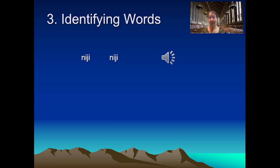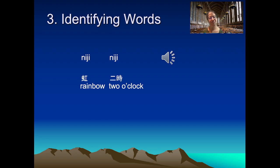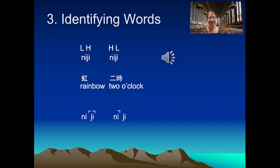Moving up from the syllable level to the level of words, prosody again makes minimal pair distinctions. In Japanese, pitch contrast distinguishes between the words rainbow and two o'clock. The contrast is between a low tone followed by a high versus a high followed by a low. This can be notated not just with high and low targets but with a bracketed notation indicating, for example, a drop down in pitch.